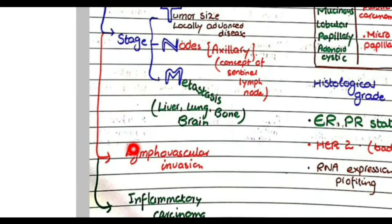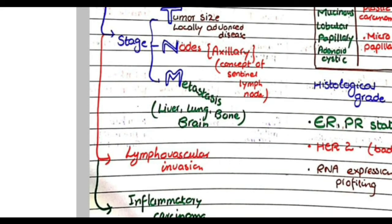Third thing is lymphovascular invasion. When you see the tumor on microscope and you see that the cells are invading the lymphatics or small vessels, then this lymphovascular invasion determines that it has worse prognosis as compared to if there were no lymphovascular invasion.